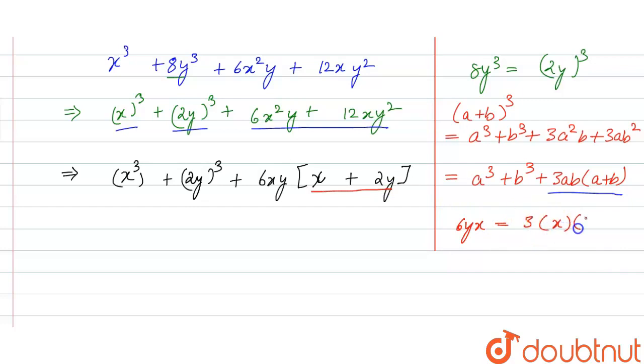So we have made the term of a plus b and this 6xy can be written as 3 into x into 2y.